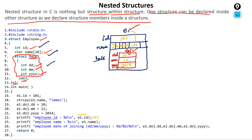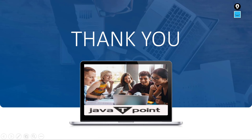E1.name prints 'James', and E1.DOJ.DD, MM, and YY will print 10, 11, and 2014 respectively. This is what nested structure is all about. Once you get this concept it becomes very easy to understand nested structures. Thank you so much for watching — please like, subscribe, and share.